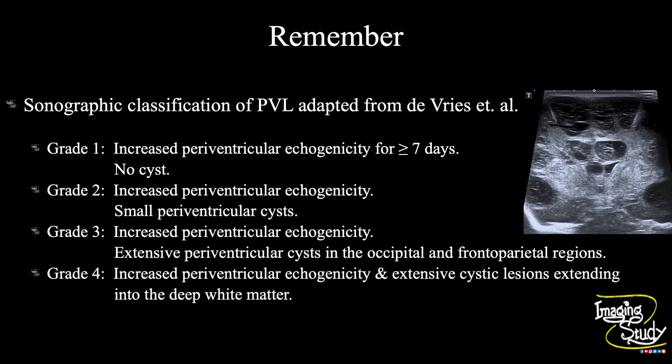Now the take-home message: there is a sonographic classification of periventricular leukomalacia. In grade 1, there will be a transient increase in periventricular echogenicity for more than 7 days with no cystic spaces. In grade 2, there will be small periventricular cysts along with increased periventricular echogenicity. In grade 3, these cystic spaces extend up to the occipital and frontoparietal regions.